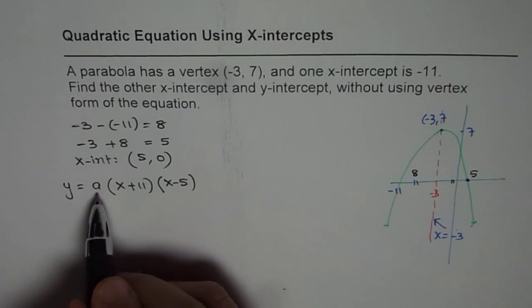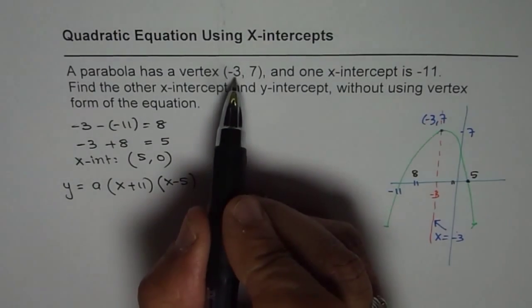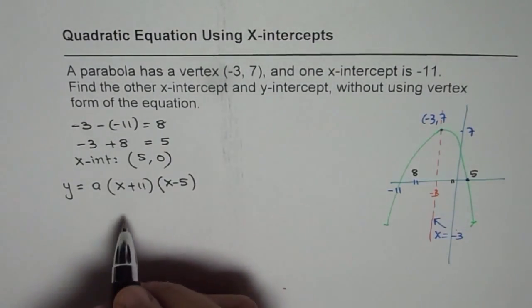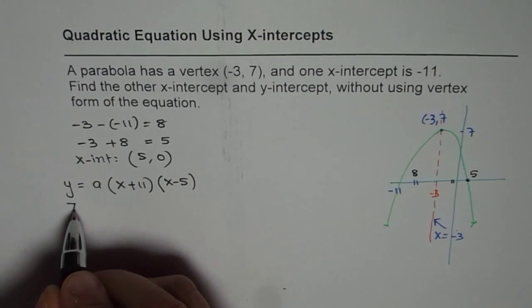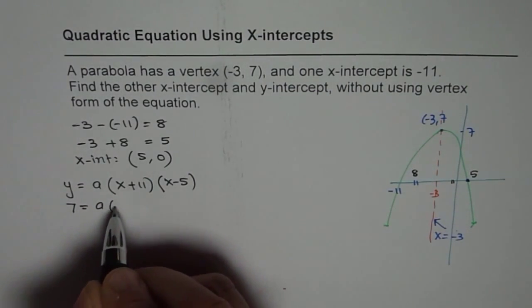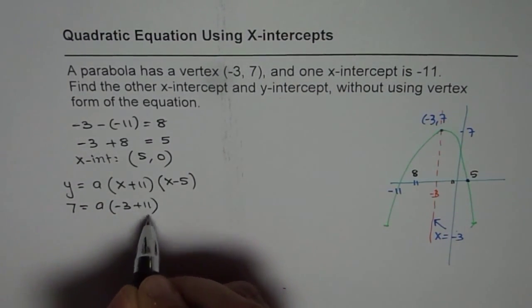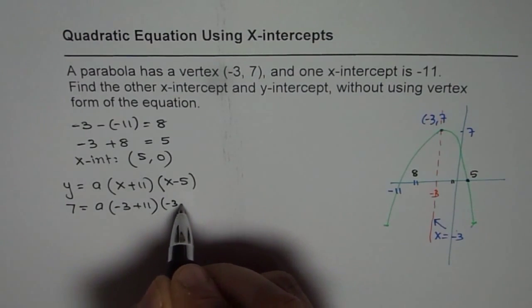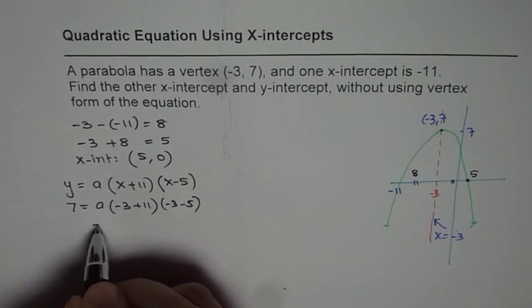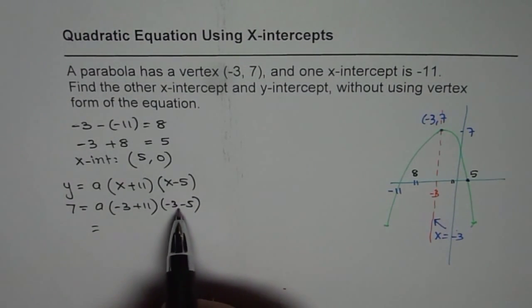To find the value of a, we can use vertex, which is (-3, 7). So -3 is x value and 7 is y value. So 7 equals a times (-3 + 11), and here we have -3 minus 5, which we know is 8 and 8, right?